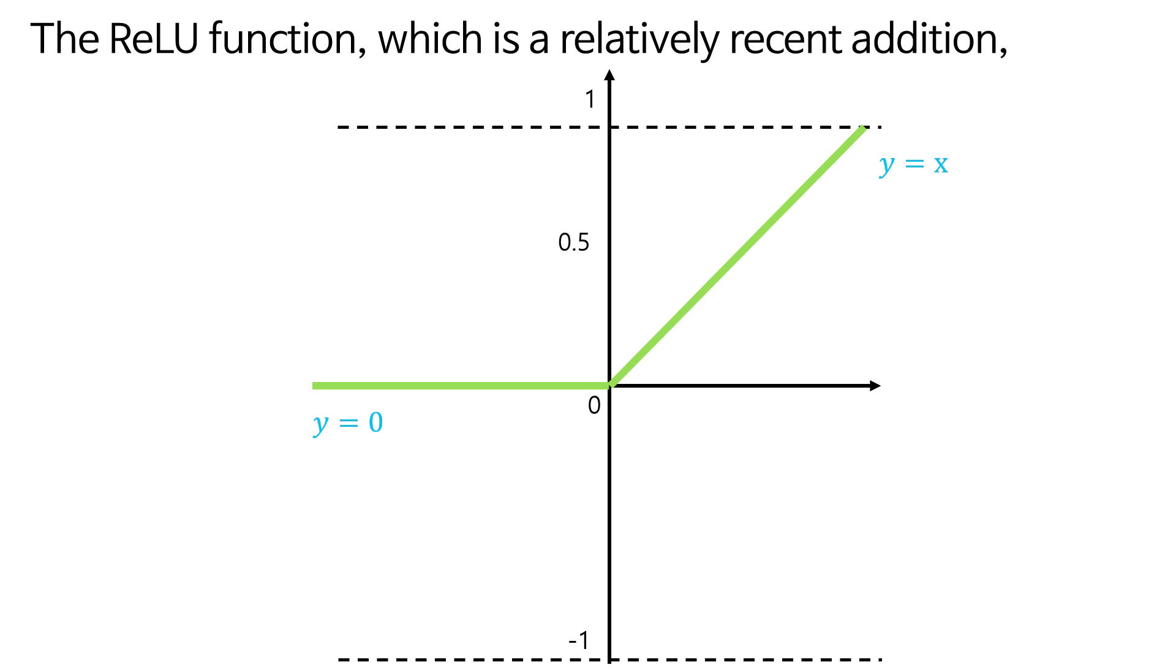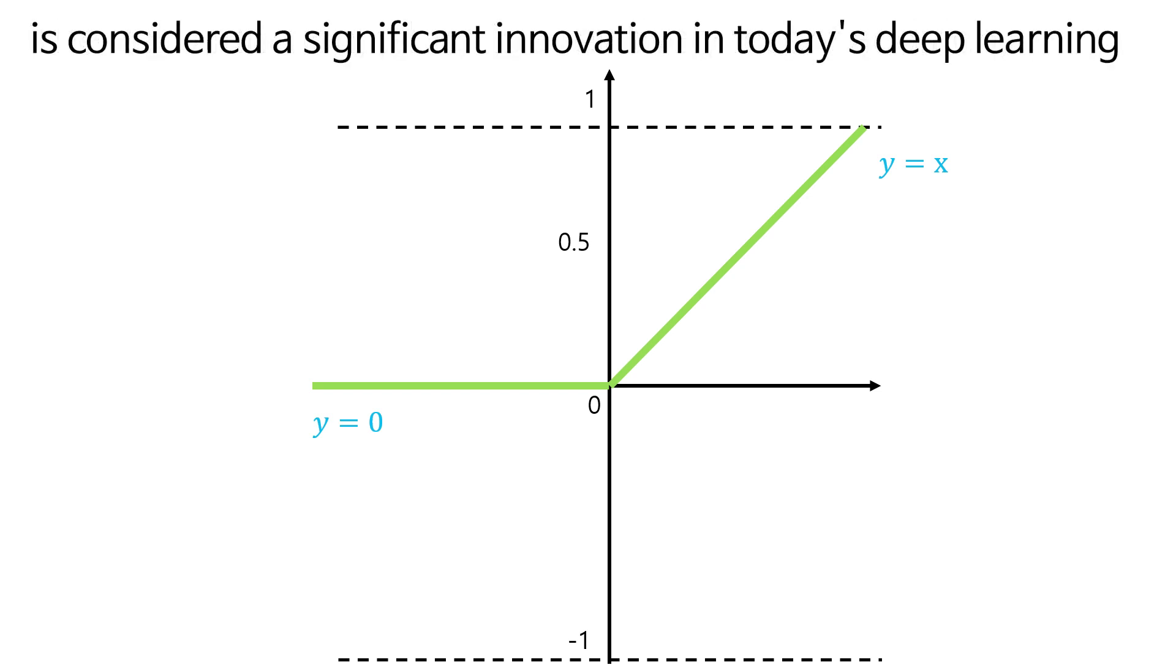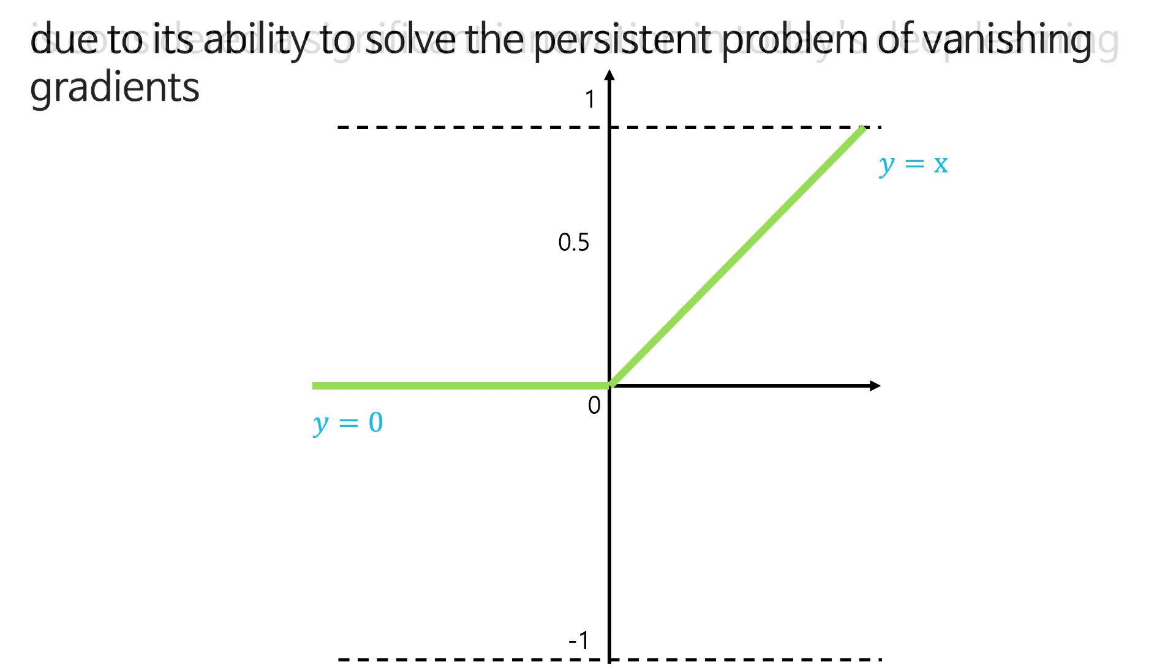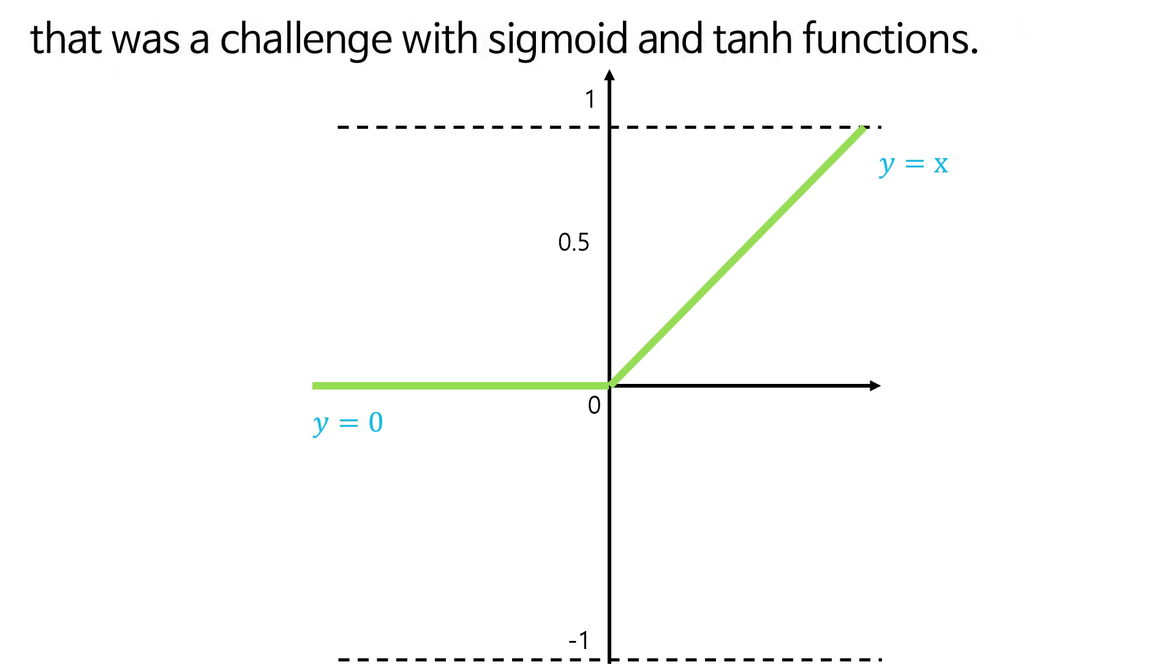The RELU, rectified linear unit, function, which is a relatively recent addition, is considered a significant innovation in today's deep learning due to its ability to solve the persistent problem of vanishing gradients that was a challenge with sigmoid and hyperbolic tangent functions.